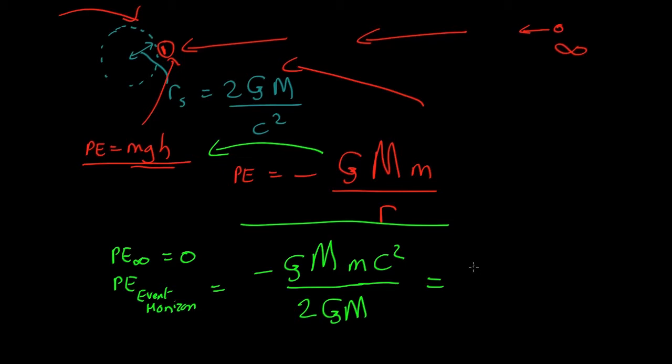So that is equal to G's cancel, the mass of the black hole cancels. It's just mc squared over 2.